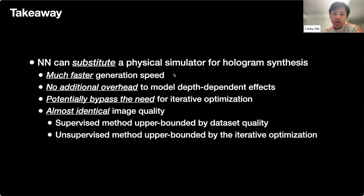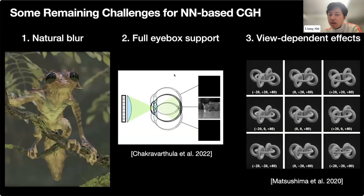As takeaways: CNNs are an excellent surrogate for both deterministic methods like direct wave simulation and iterative methods, depending on the training approach. Ideally, CNNs give much faster generation speed and impose little to no overhead on modeling depth-dependent effects like occlusion or proper defocus blur. A large model can potentially bypass the need for iterative optimization with image quality very close to parent methods. However, ultimately, quality is bounded by dataset quality. Remaining challenges for CNN-based CGH generation include: naturally defocused blur, full eye-box support, and view-dependent effects.